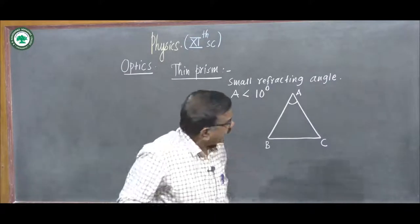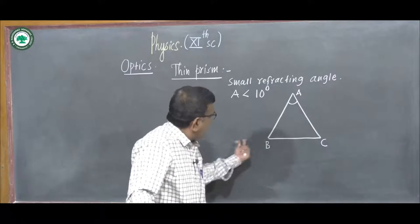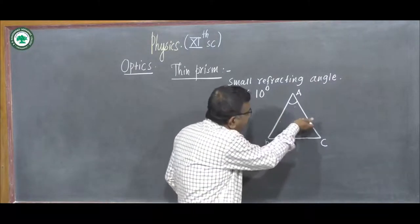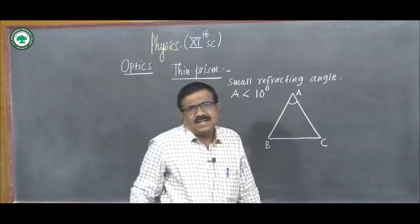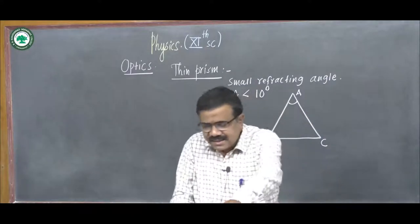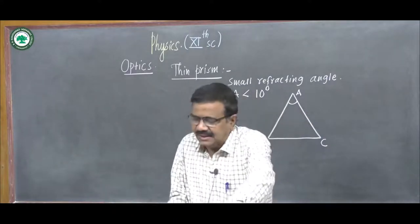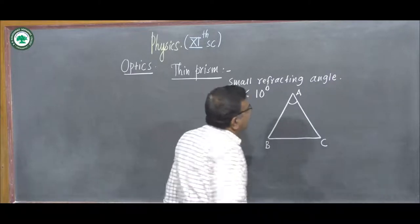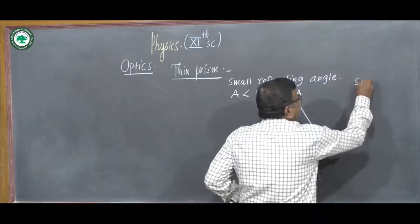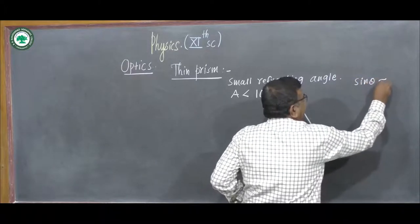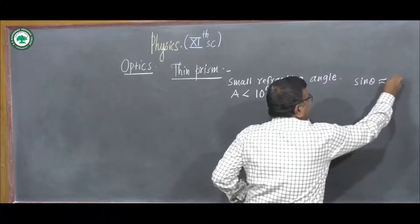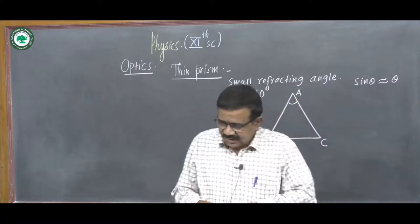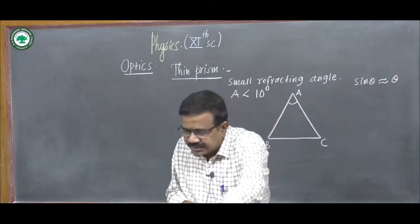For such a prism, if the angle of incidence is small, the incident ray is deviated towards the base. If the angle of incidence is small, other angles are also small. And if the angles are small and in radians, we write sin θ ≈ θ.